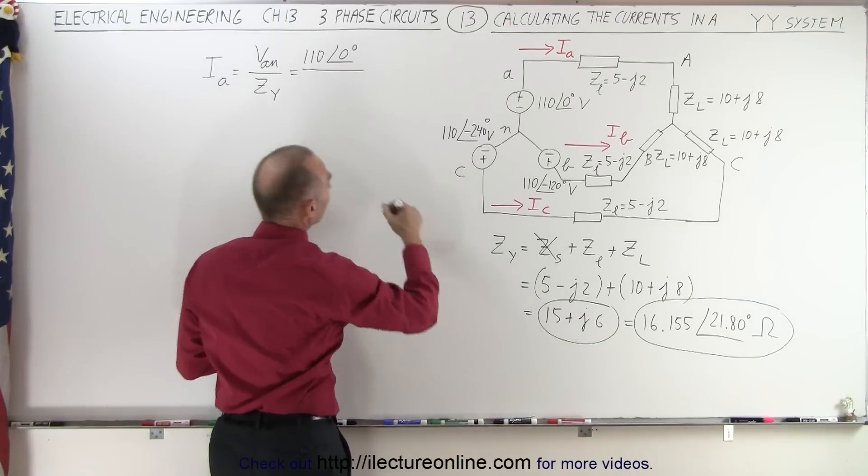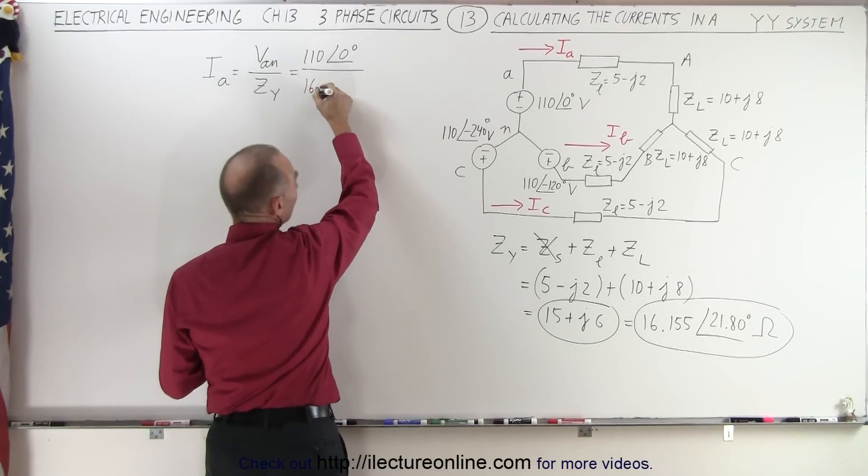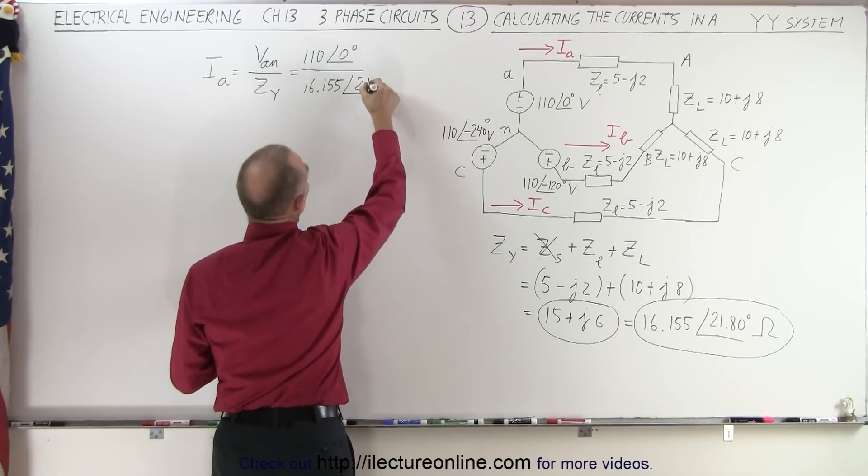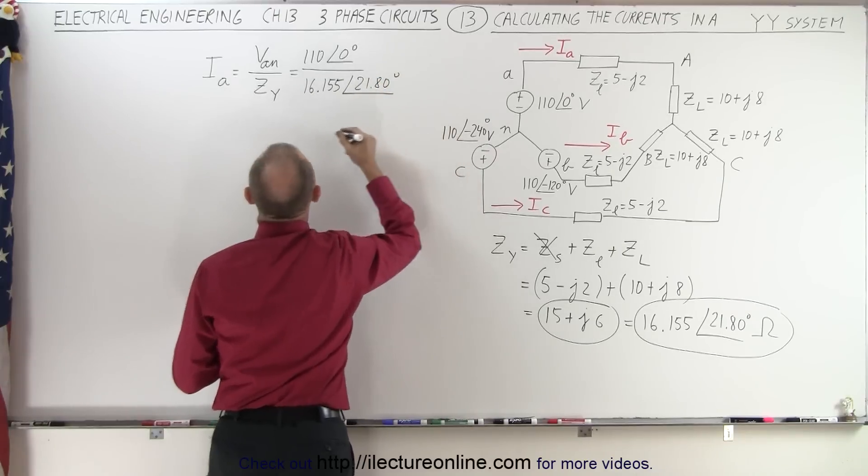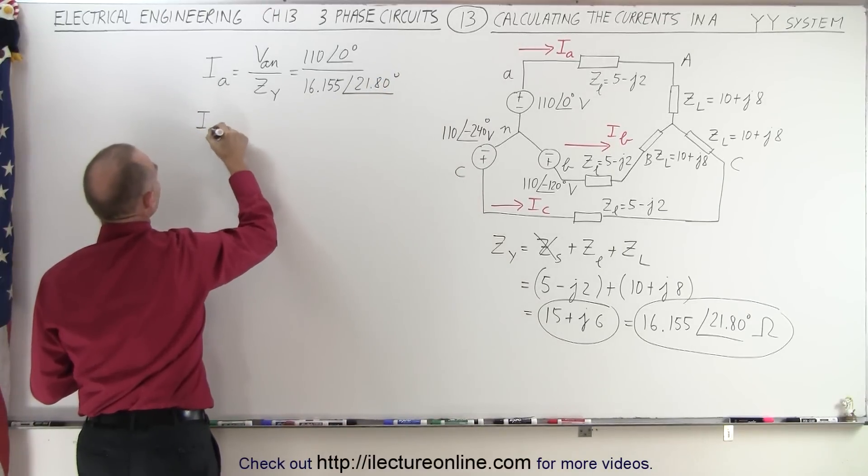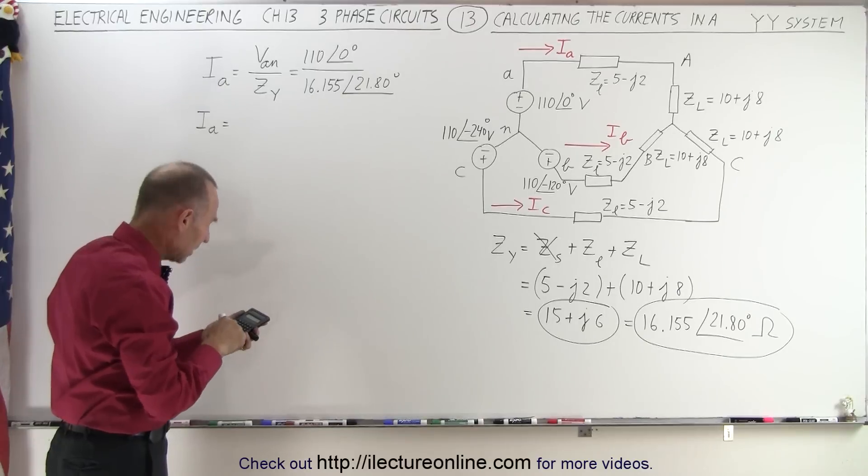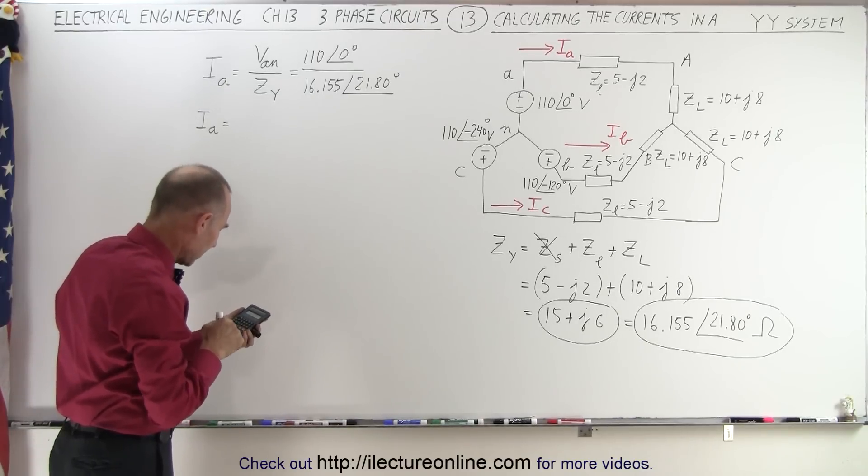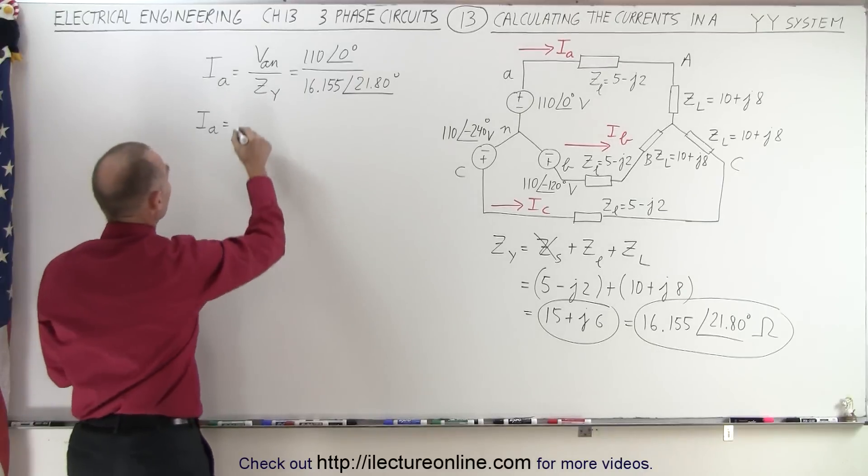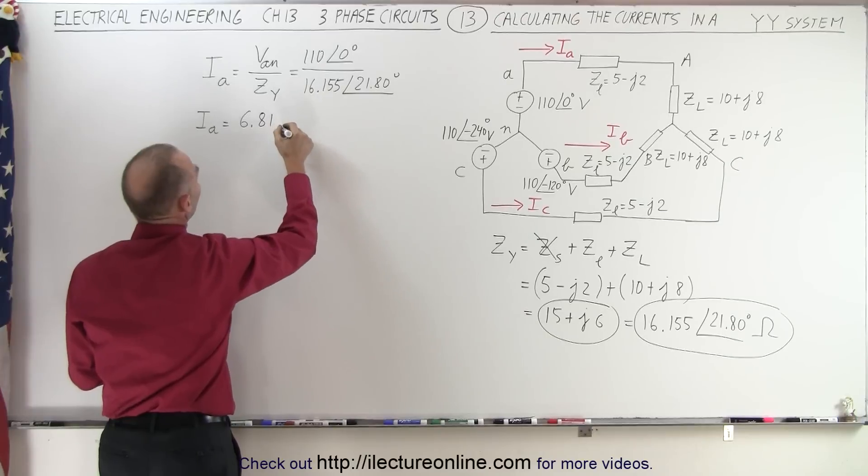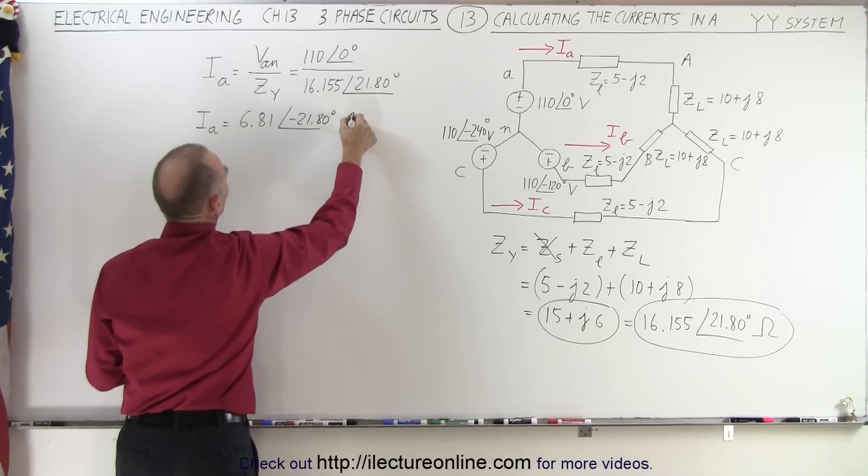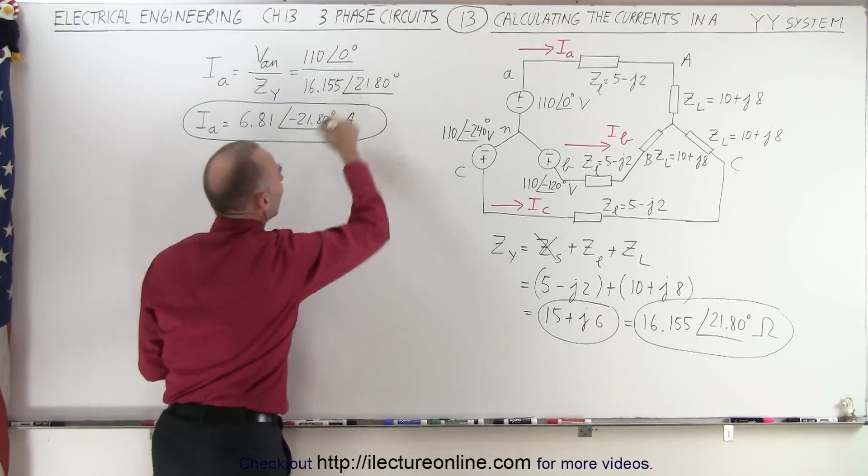by 16.155 at a phase angle of 21.80 degrees, which means that Ia is therefore equal to 110 divided by 16.155. That would be 6.81 amps at a phase angle of minus 21.80 degrees. And that would be, of course, in amps. So there's the current on line A.